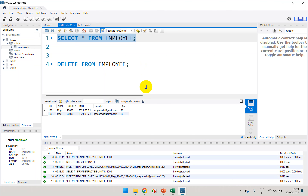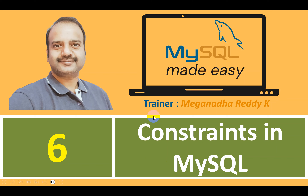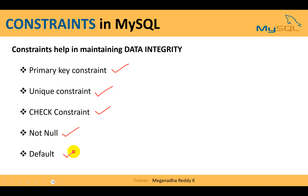Let's try to understand the different types of constraints. We have five constraints. The first is primary key constraint. The second is unique constraint. The third is check constraint. The fourth is not null constraint. And the last one is default constraint. Let's try to understand them one by one.